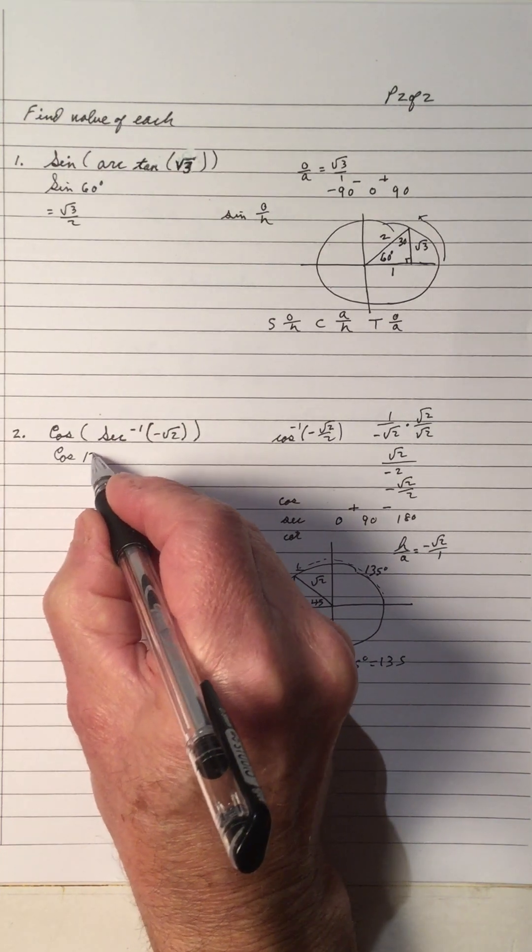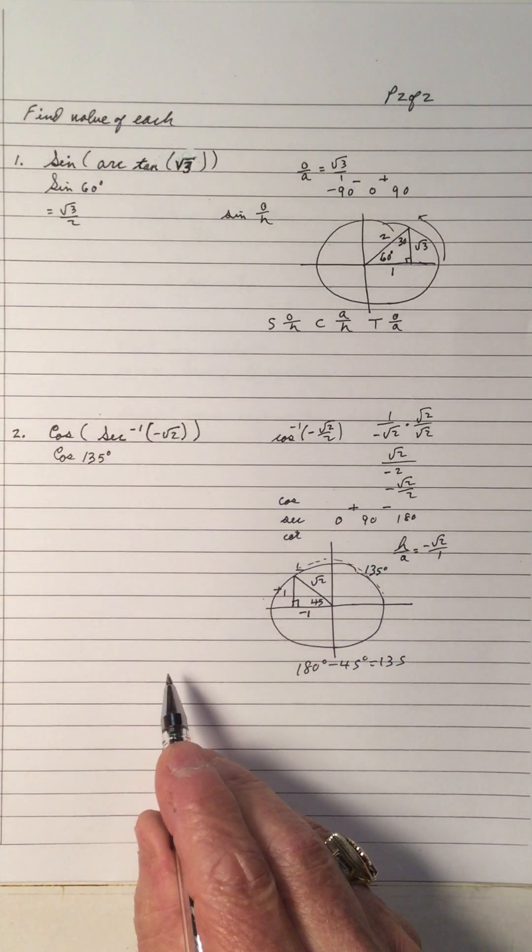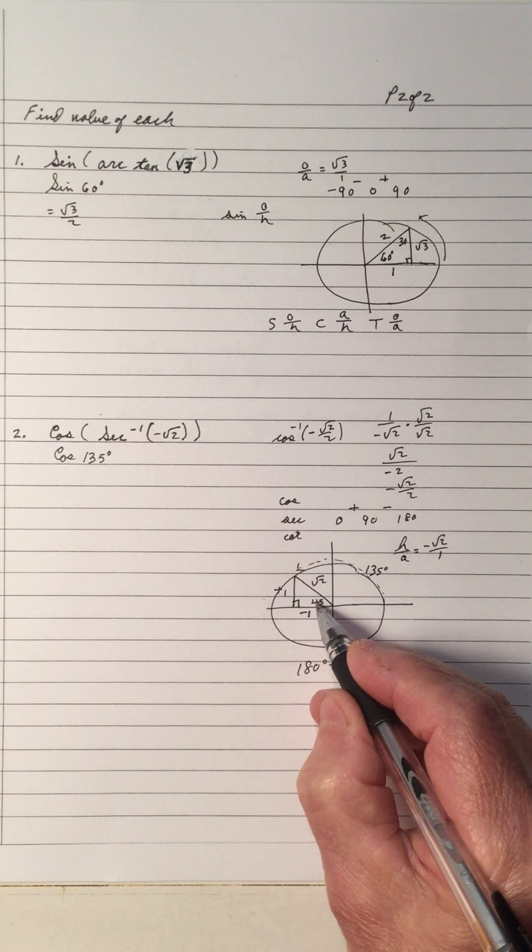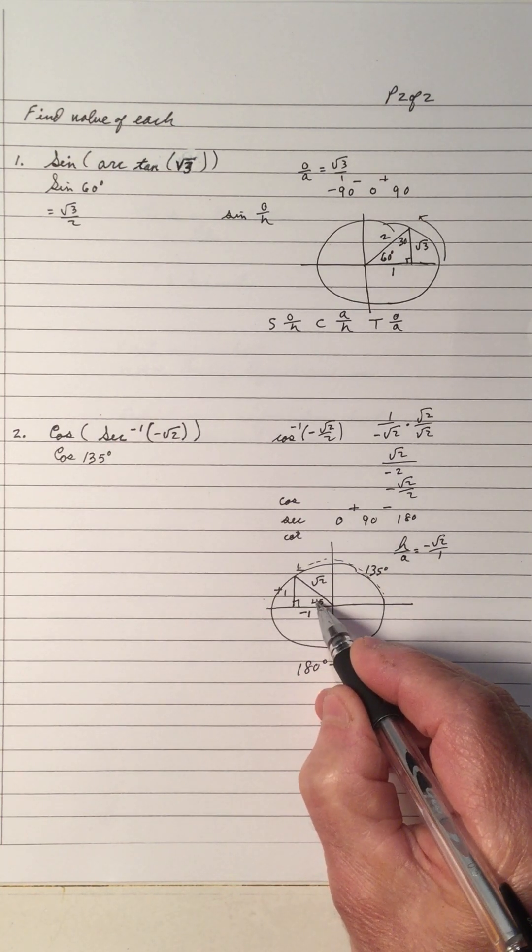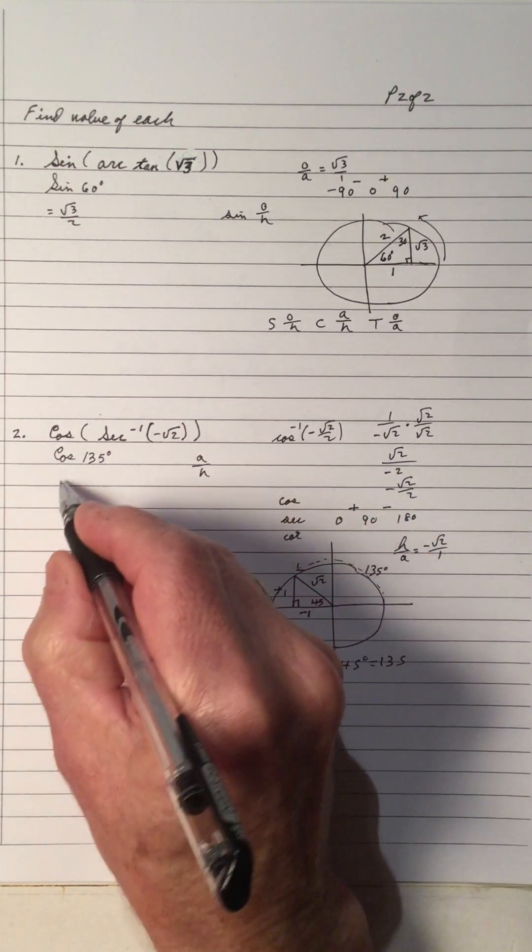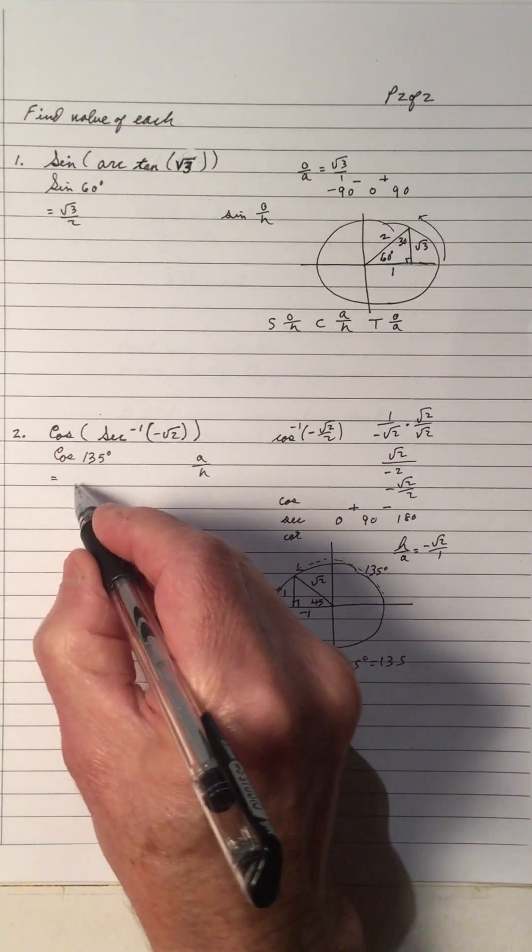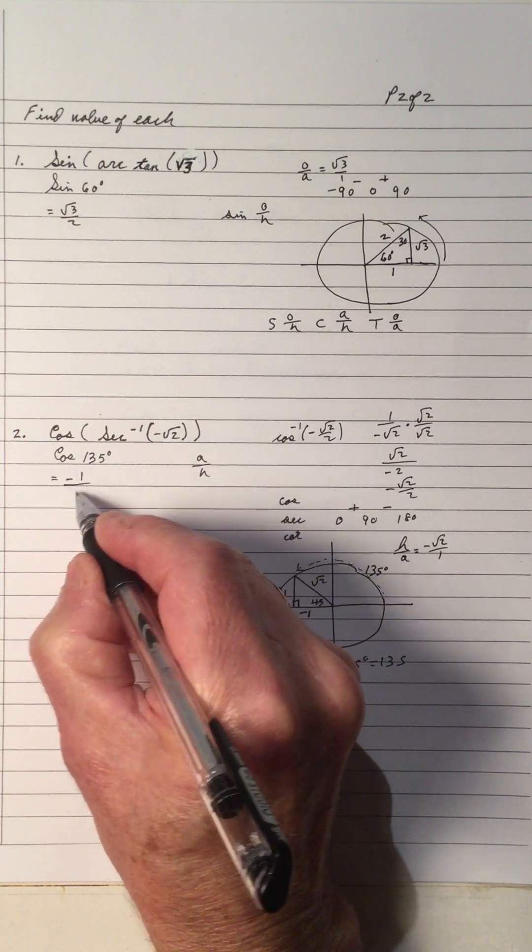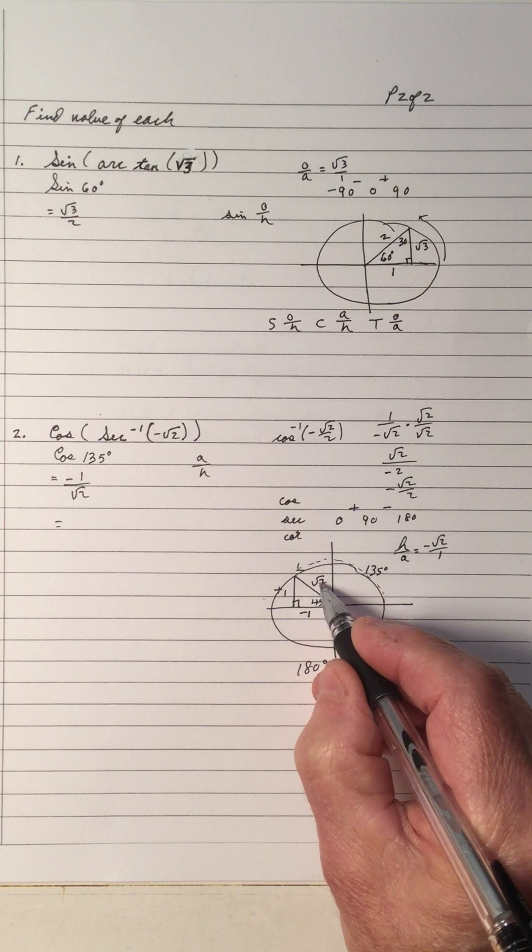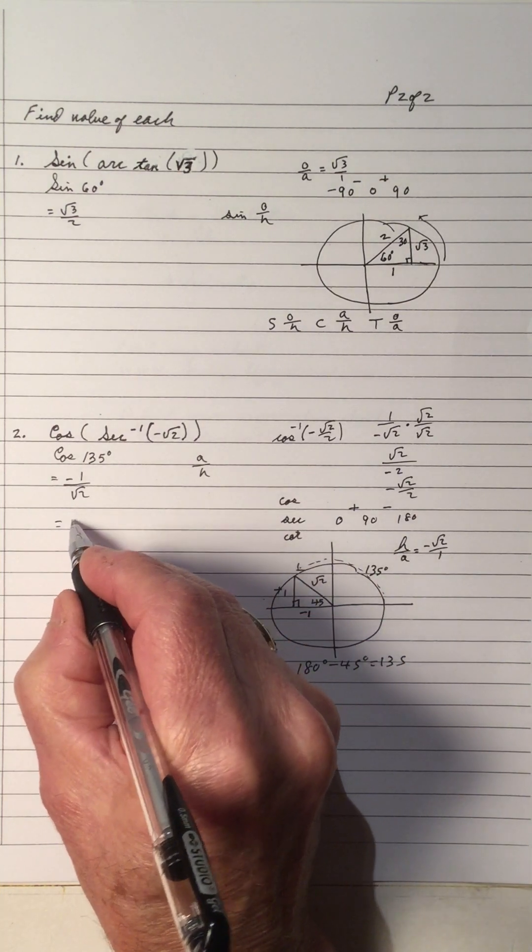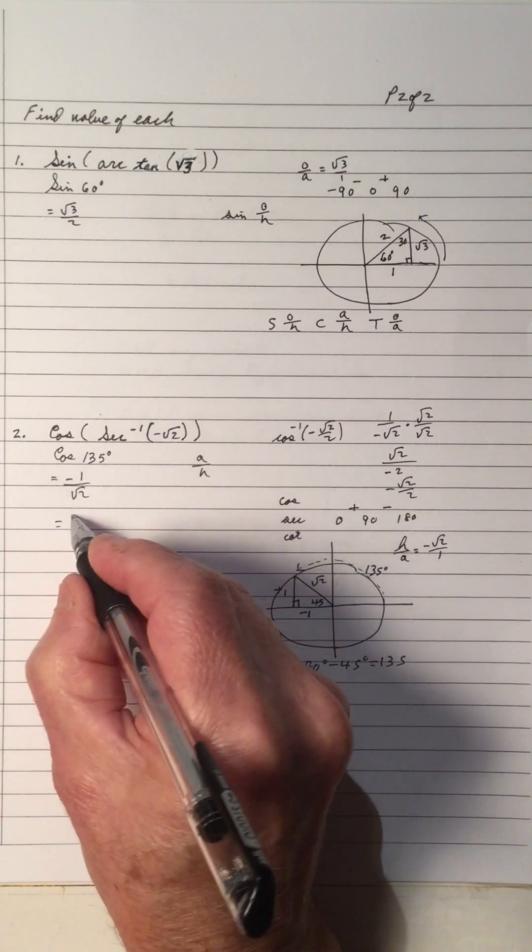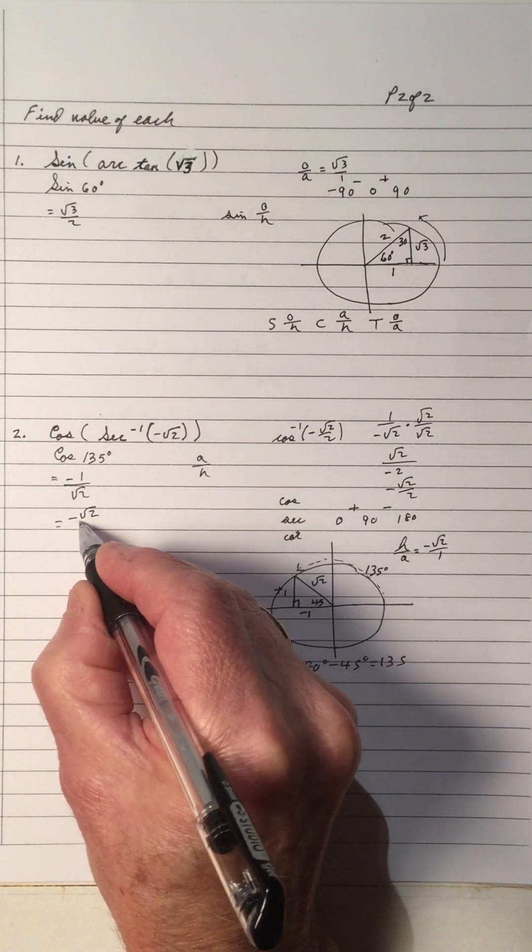So, this is 135 degrees. So, the cos of the 135, which is the same as the cos of this 45 in this quadrant, is cos is adjacent over hypotenuse. So, the adjacent is negative 1 over root 2. Adjacent over hypotenuse. So, therefore, we have, again, multiplied by root 2 over root 2 right here. So, this is the negative root 2 over 2.